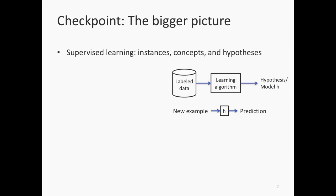The supervised setting says: there's labeled data — instances paired with labels — that goes into a learning algorithm, which spits out a hypothesis. This hypothesis can then label new examples. We've looked at at least two specific learning algorithms: perceptron and decision trees, and some variants.